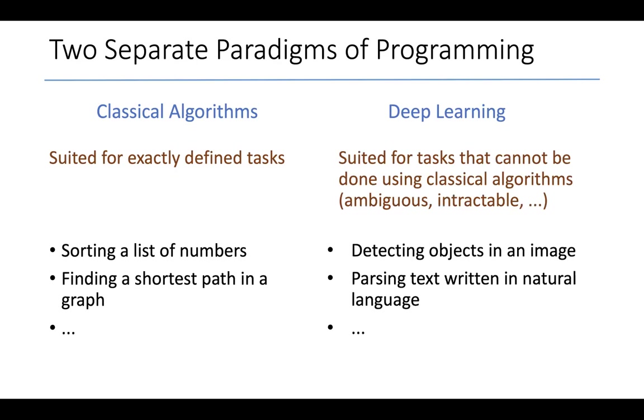Deep learning, on the other hand, is suited for tasks that cannot be done adequately using classical algorithms. There are many reasons why that might be. It may be that the tasks themselves are ambiguous, or it may be that classical algorithms are intractable.